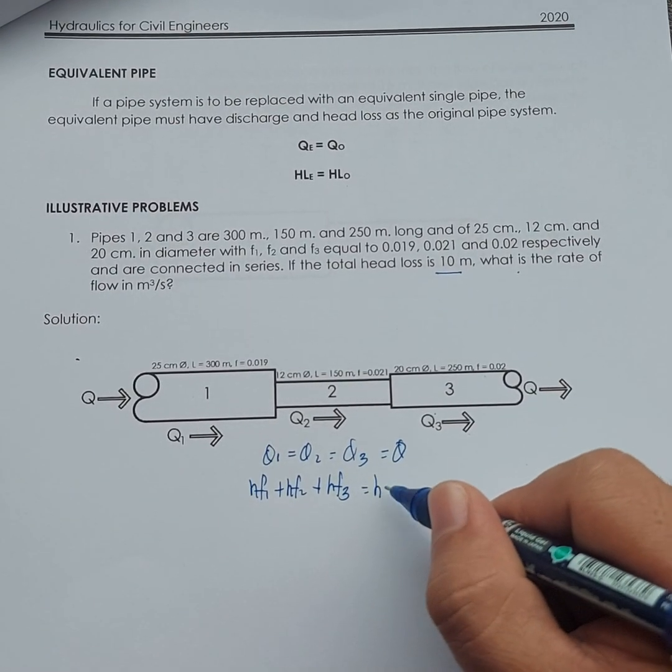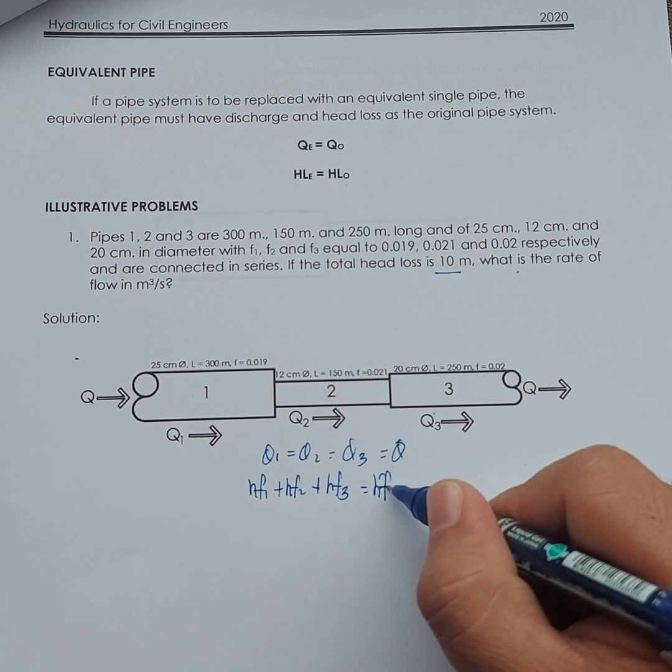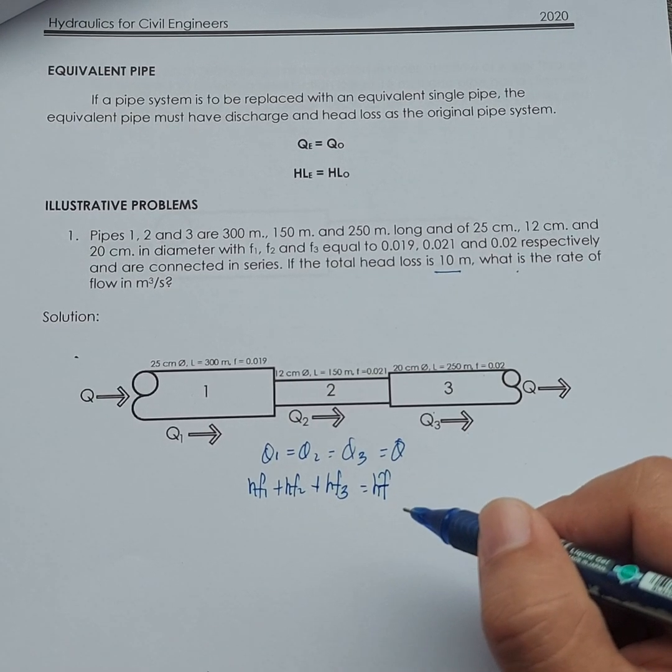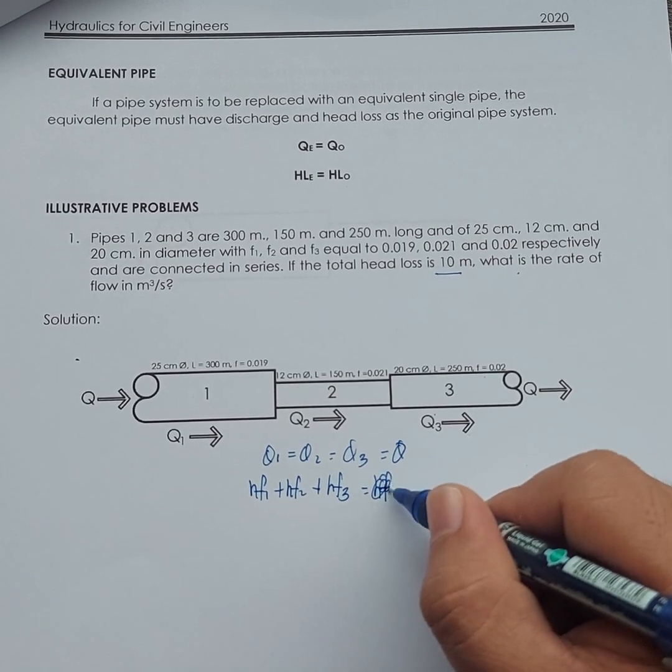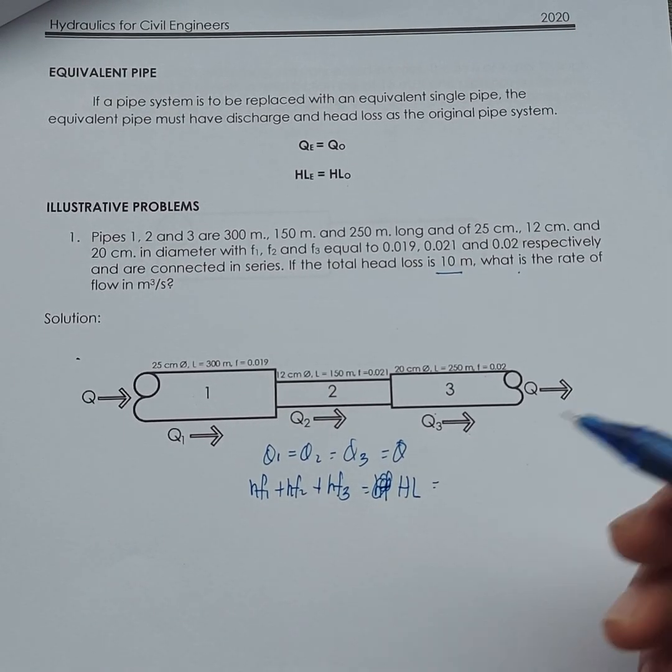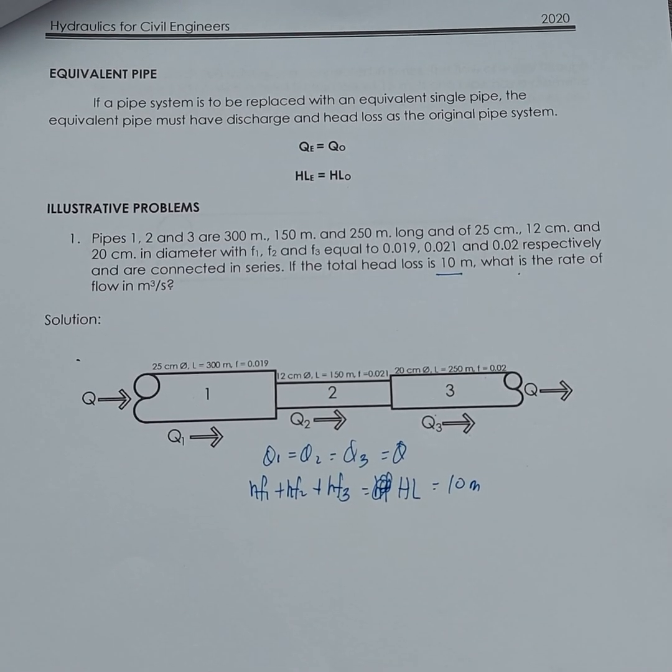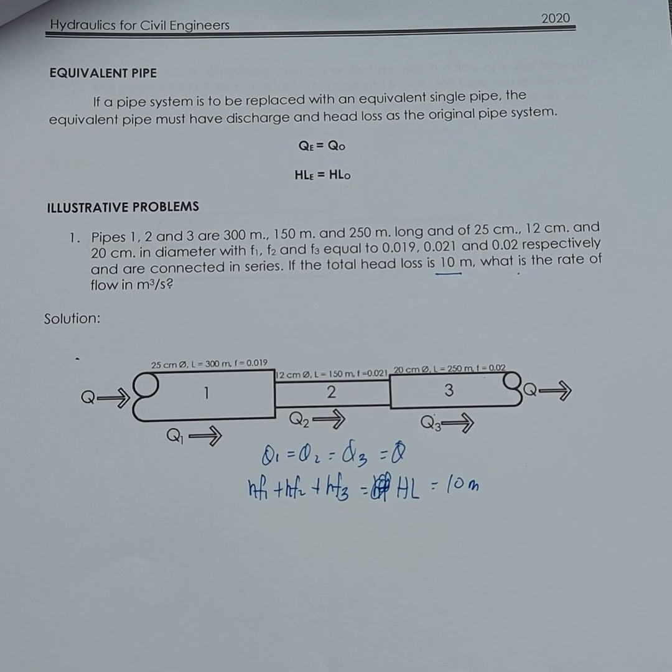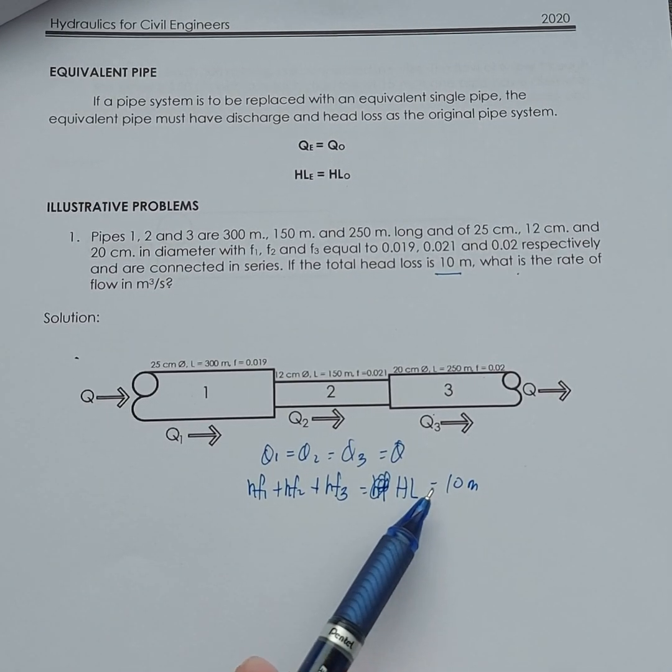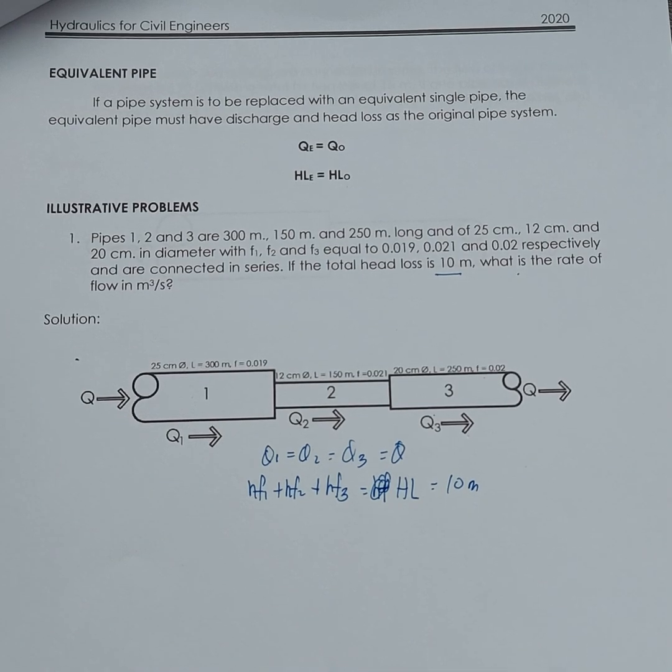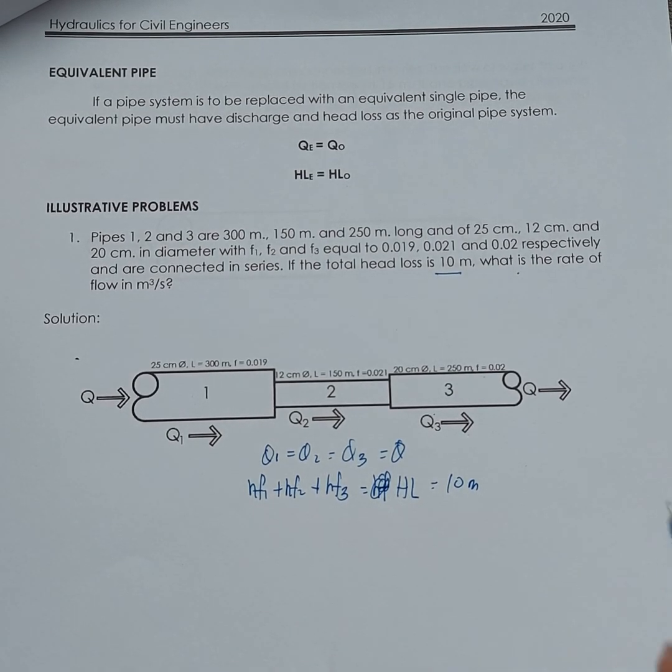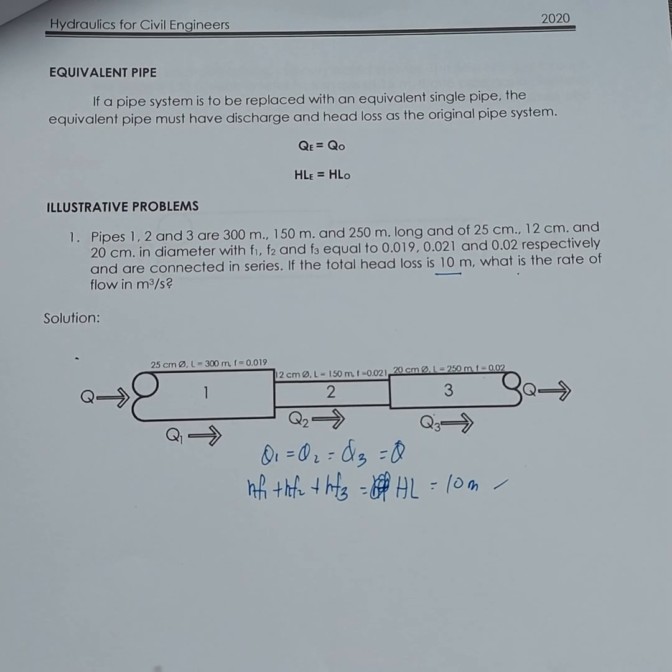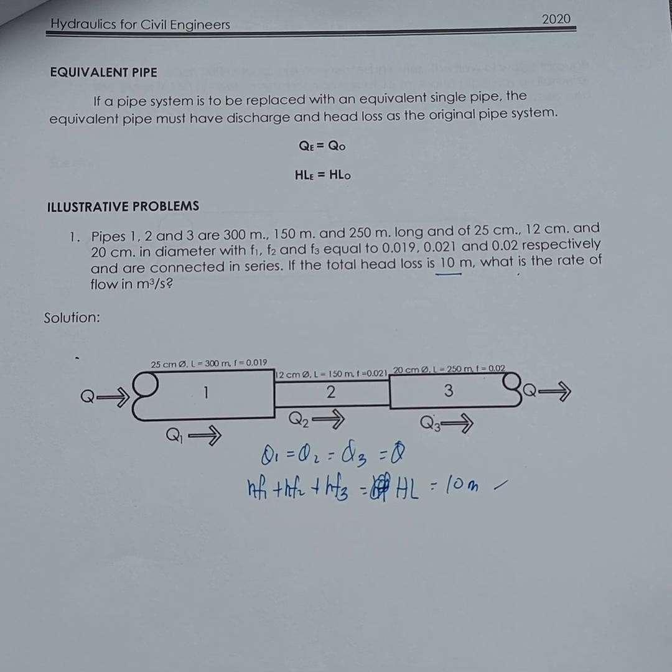And the total head loss from one end to the other is equivalent to hf1 plus hf2 plus hf3. That should be equal to, let's say, hf, HL, which is equal to 10 meters. That's limited to 10 meters. Now what should be the discharge that should be maintained for the head loss to be 10 meters lang? I think our key equation would be this. So since given yung friction factor, then obviously we're going to use the Darcy-Weisbach formula or equation to solve for the head losses in each pipe. So we have HL then is using the second equation there, HL is 10 meters.